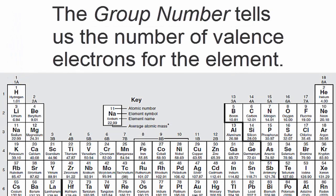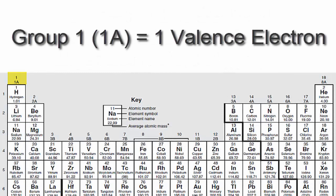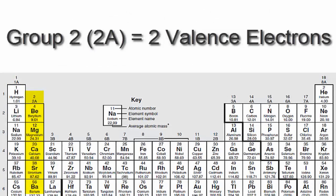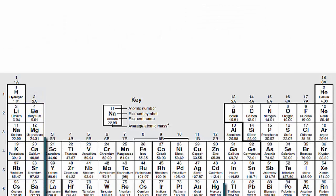For example, hydrogen has one valence electron because it's in group 1, sometimes called 1A. If you look at group 2 or 2A, you'll see that those elements have two valence electrons.